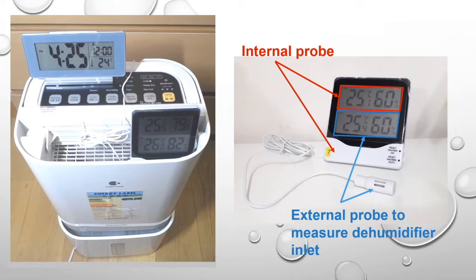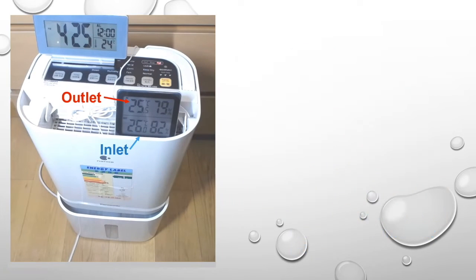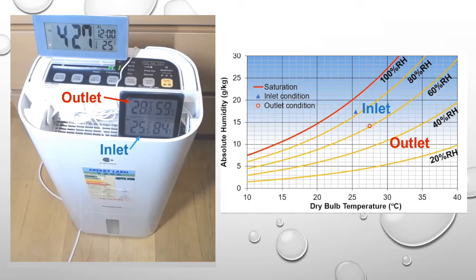Before we start the dehumidifier, the room has a temperature between 25.5 and 26 degrees Celsius and a relative humidity of about 80%. After starting the dehumidifier, we see that the outlet temperature increases, while the relative humidity decreases.